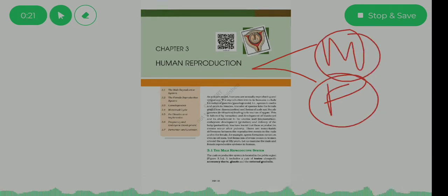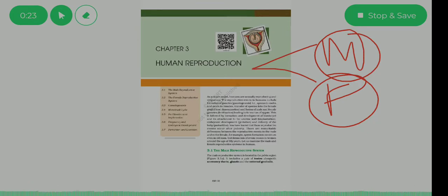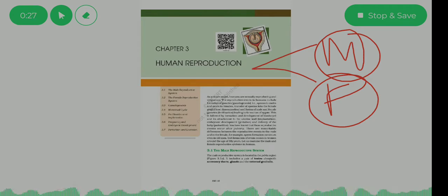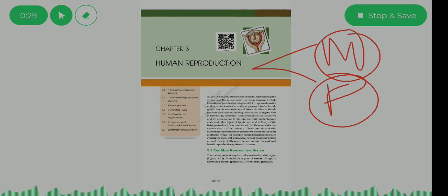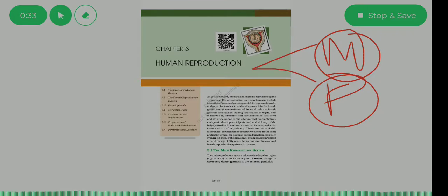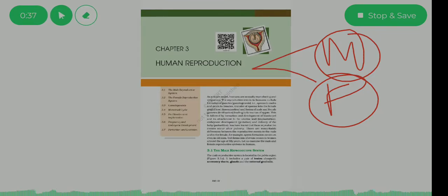Both systems are different. First we need to understand how the male reproductive system works, then we will study the female reproductive system. After that we can move to the main topics: how reproduction occurs, how fertilization happens, how the embryo develops, and how a baby is formed.